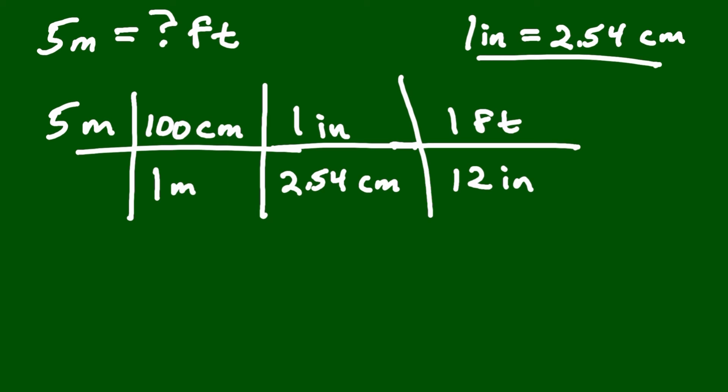So now we can cancel our units - the inches, centimeters, and meters. We're left with 5 times 100 over 2.54 times 12, and the units will be in feet.